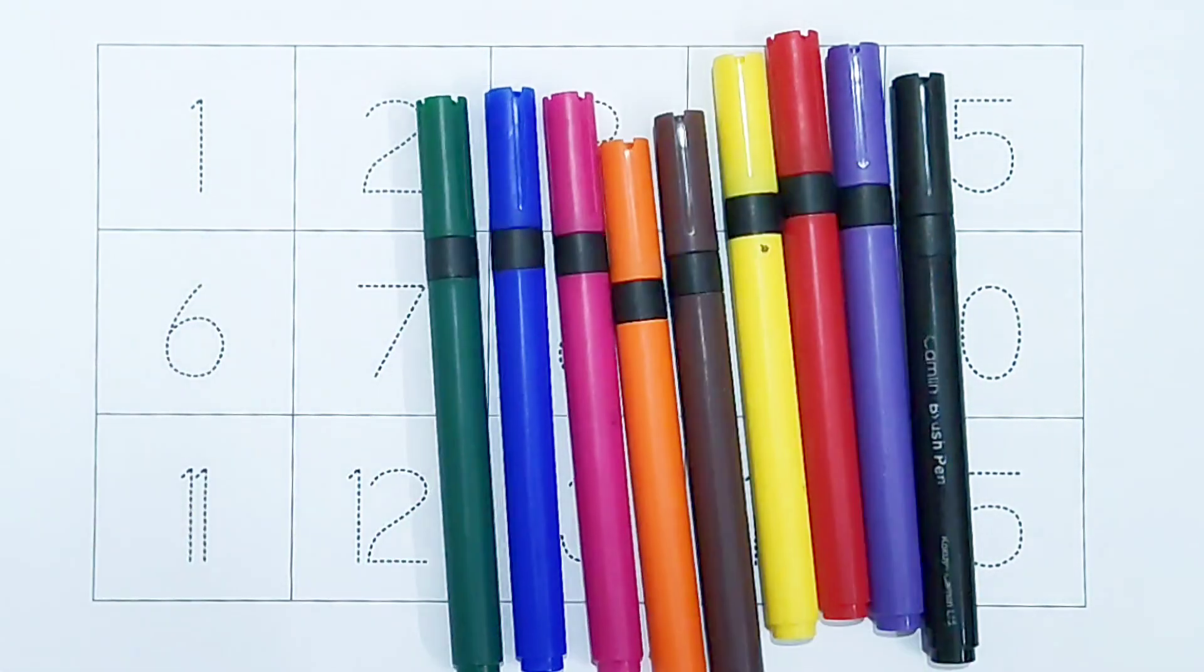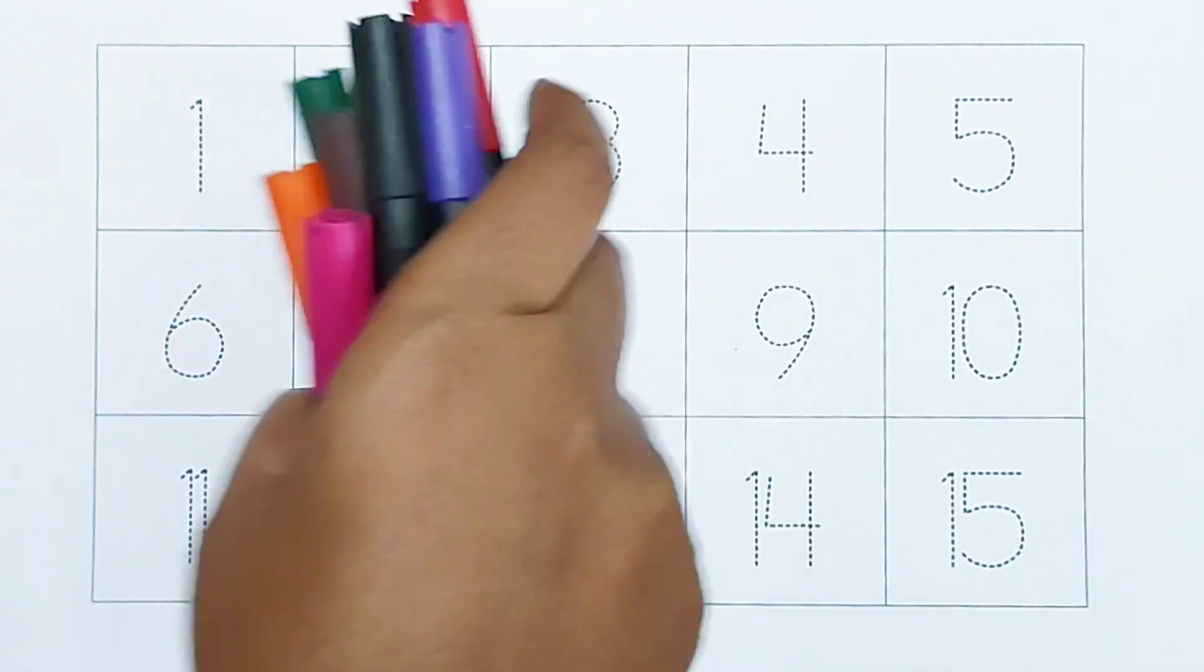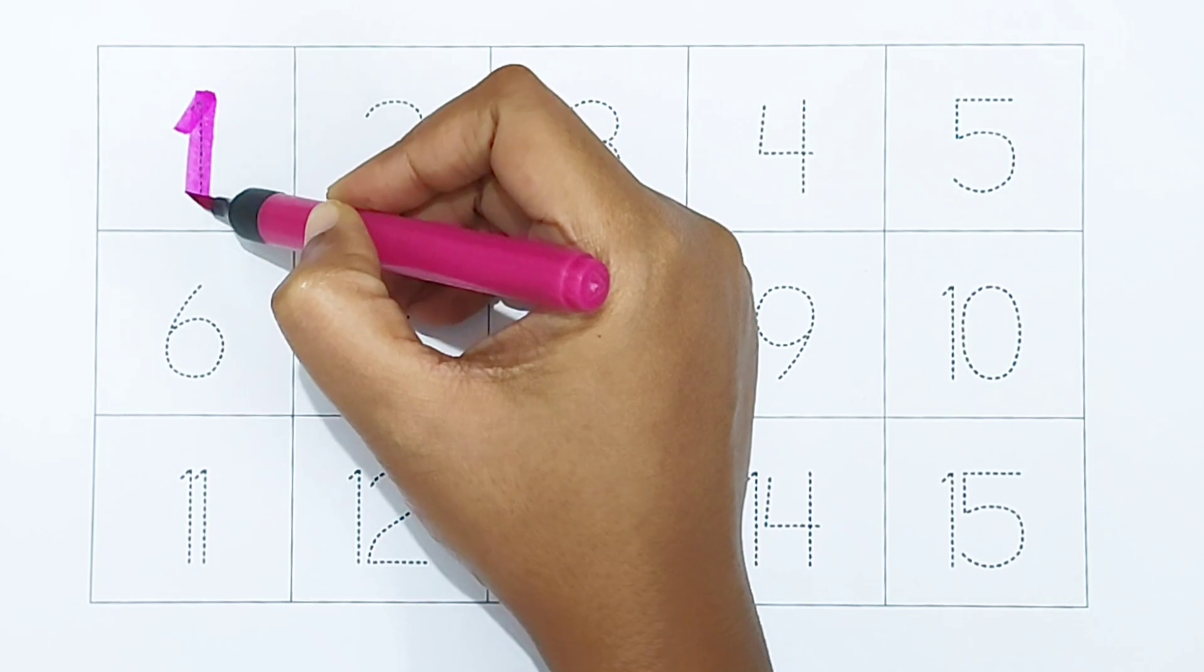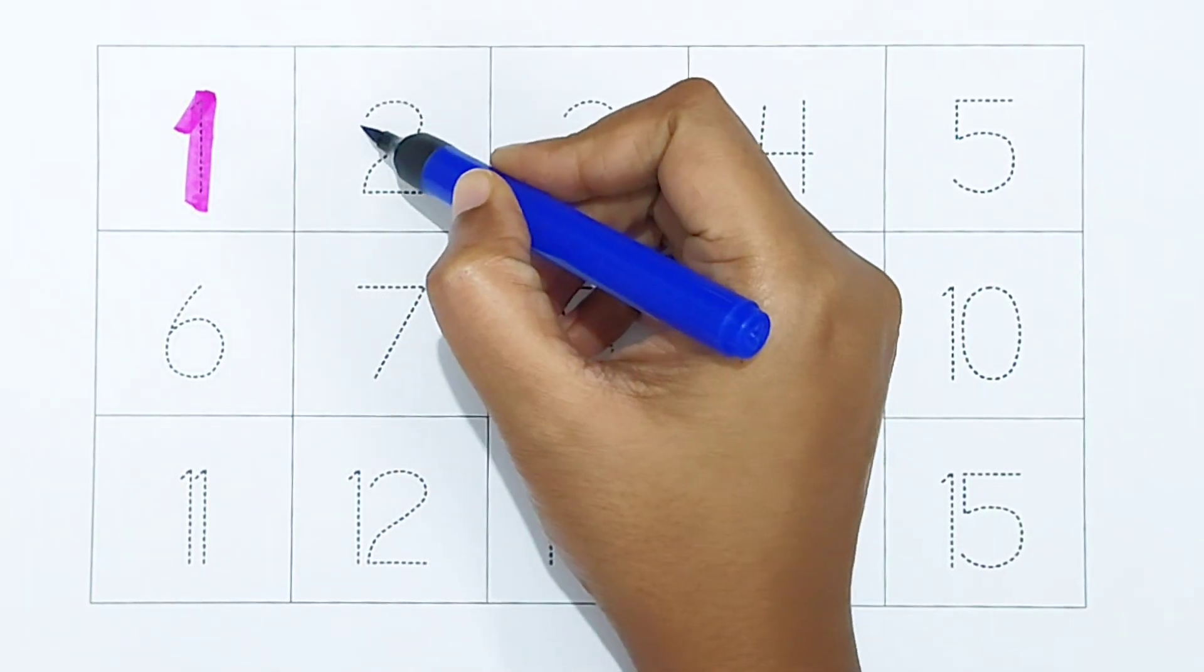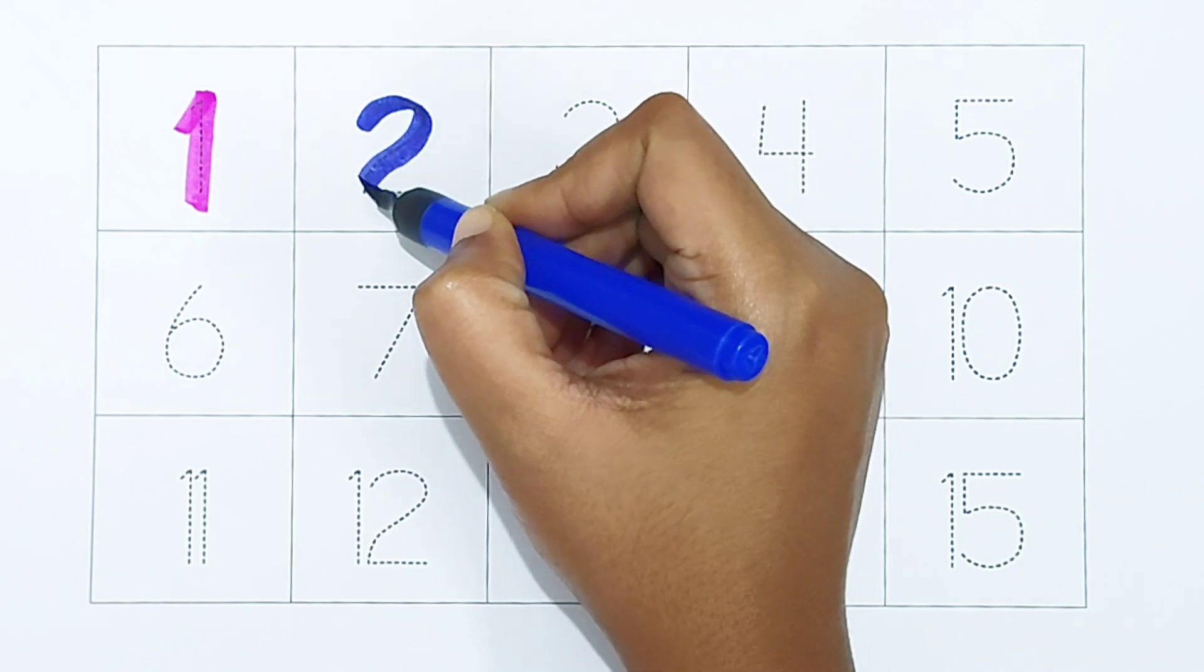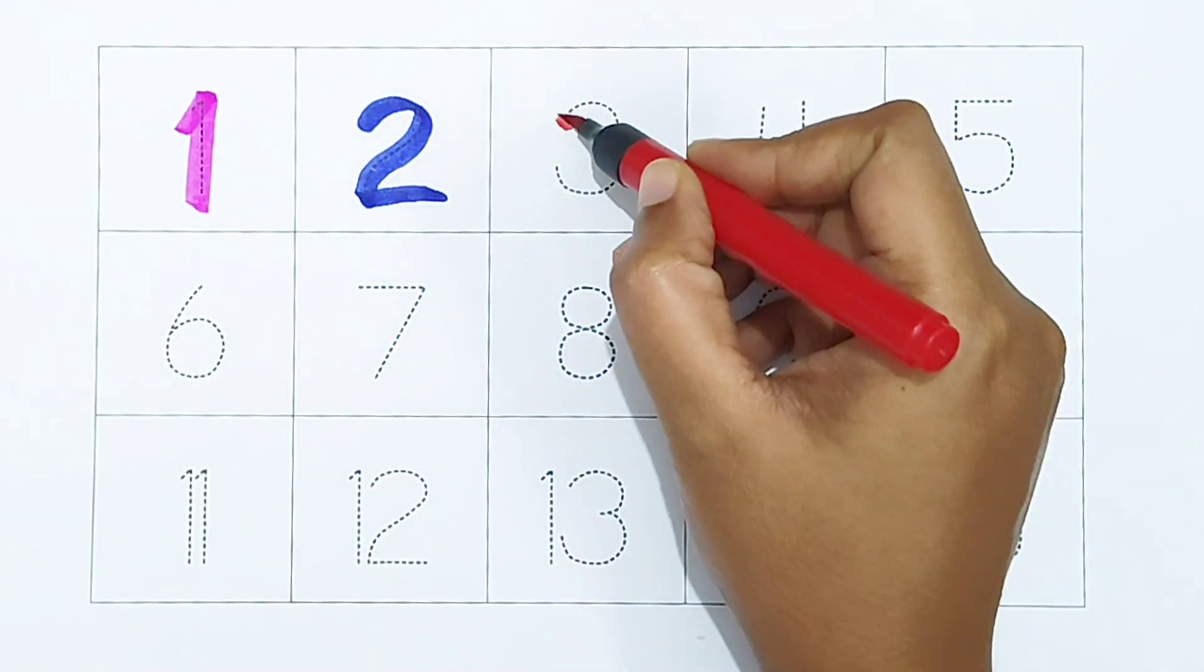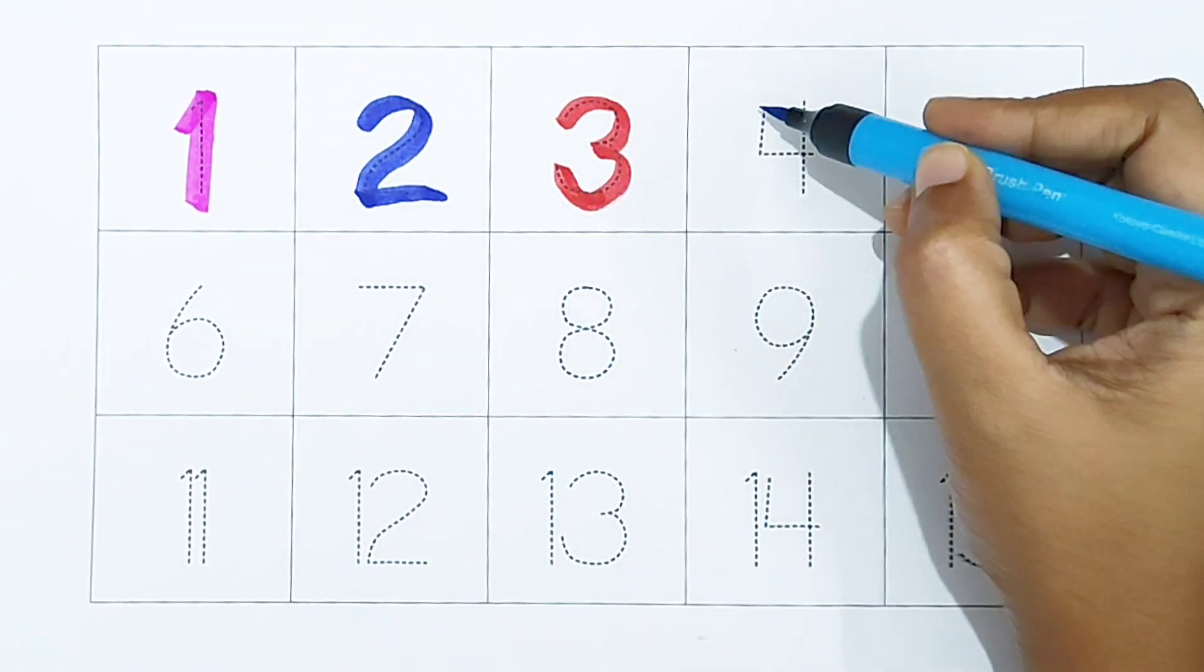Hi kids! Today we can learn the numbers from 1 to 15. Let's begin. One, dark pink color. One, dark pink color. Two, dark blue color. Two, dark blue color. Three, red color. Three, red color. Four, light blue color.